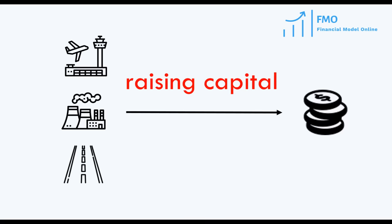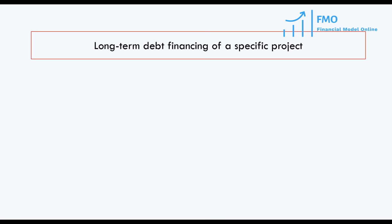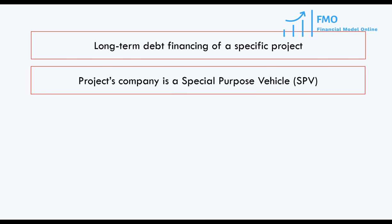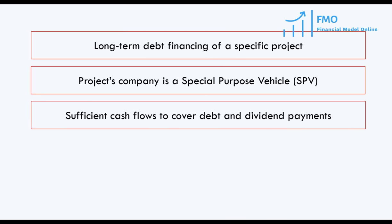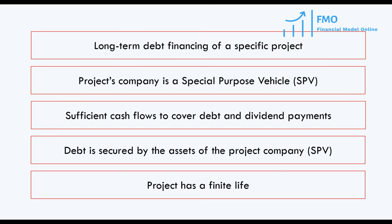Project finance has several distinctive features. First, it is a long-term debt financing of a specific project. The project's assets and cash flows are isolated, as the project is incorporated as a special-purpose vehicle. The project has to generate sufficient cash flows to cover debt repayments and dividends after covering operating expenses and capital expenditures. The debt financing raised is secured by the assets of the project company. And finally, the project has a finite life.